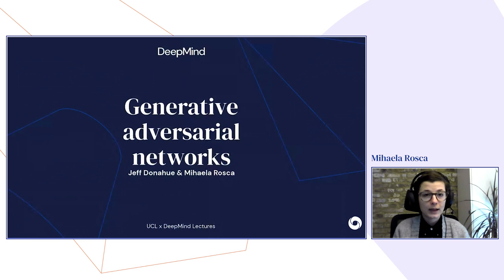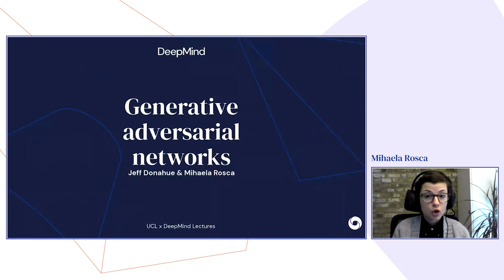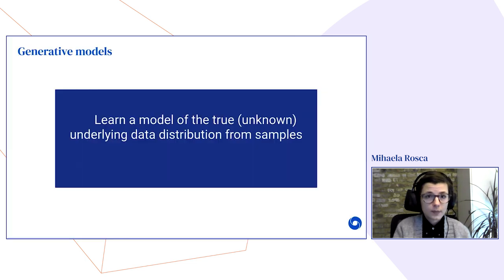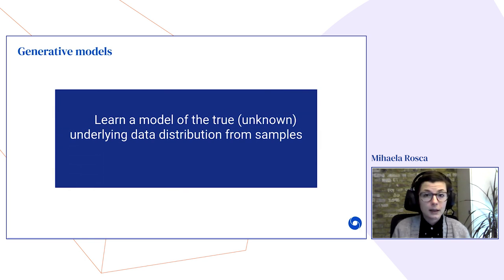Hello everyone and welcome to the next edition of the UCL DeepMind lecture series. I'm Mihaela, a research engineer at DeepMind and a PhD student at UCL. Together with Jeff, I'm going to talk to you today about generative adversarial networks. Generative adversarial networks are a type of generative model, and generative models learn a model of the unknown underlying data distribution from a set of samples from our dataset.